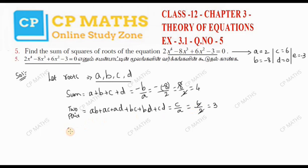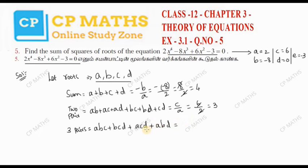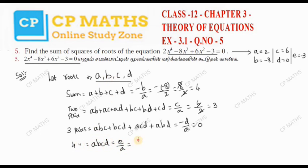The sum of products of roots taken three at a time: ABC plus BCD plus ACD plus ABD. And the sum of the product of all four roots (taken four at a time) equals e by a, which is minus 3 by 2.